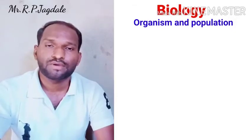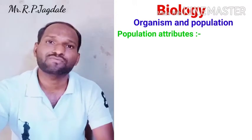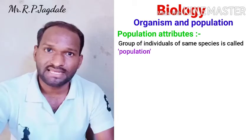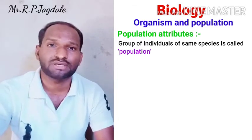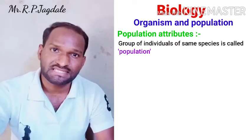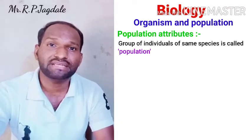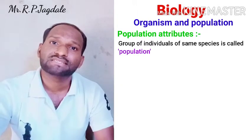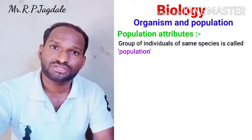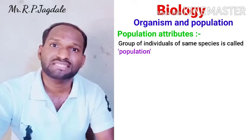In this lecture we are going to see the population attributes. First we will see what is population. Population is a group of organisms of the same species living together in a unit area. The organisms which are living together and can interbreed with each other are of the same species. Such a group of organisms is called the population of one species.